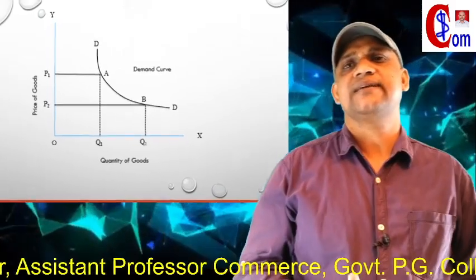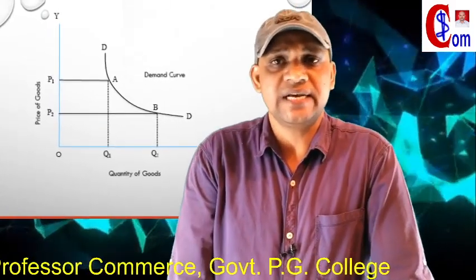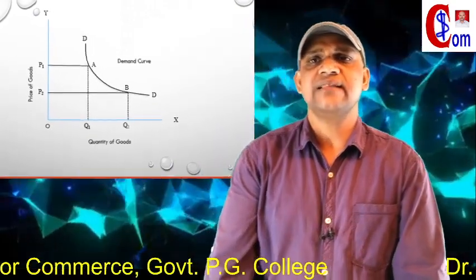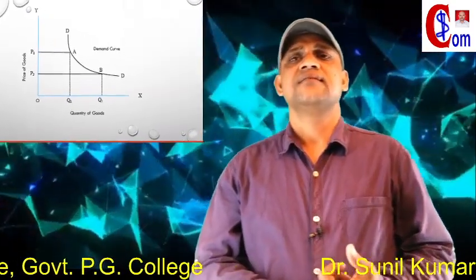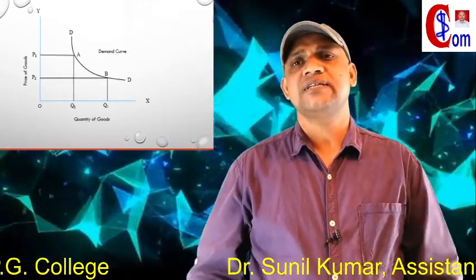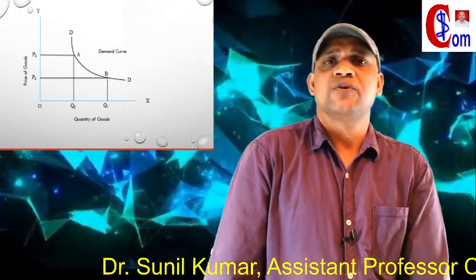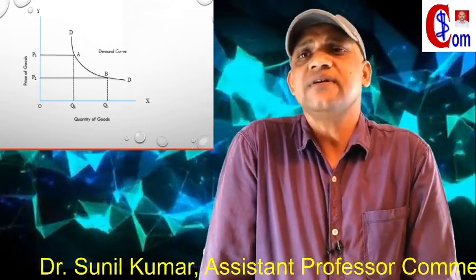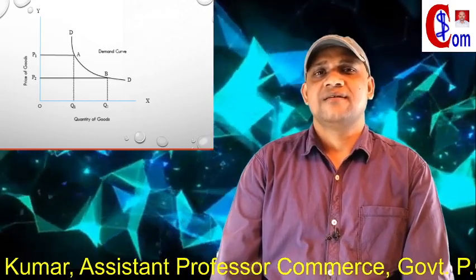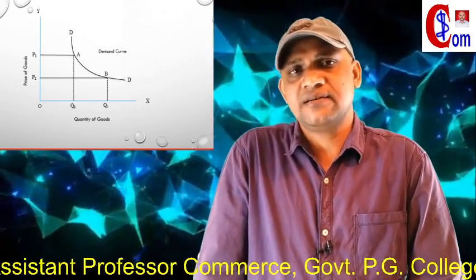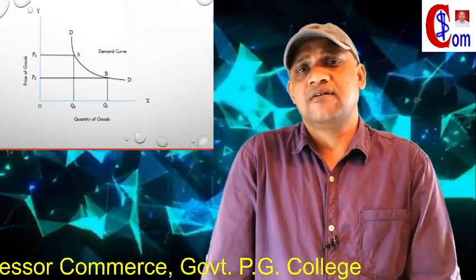The negative slope indicates that quantity demanded increases as price decreases. A point on the demand curve indicates the maximum quantity that a customer will buy at a given price, or the maximum price a consumer will pay for different quantities of goods per unit of time. This is the explanation of the law of demand.